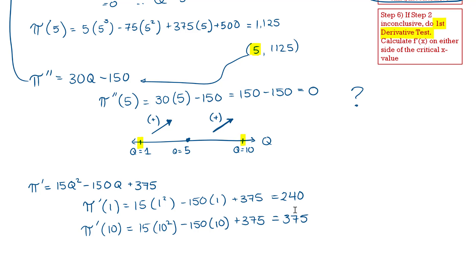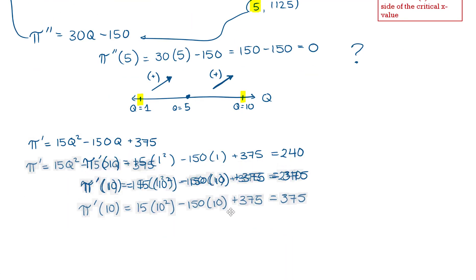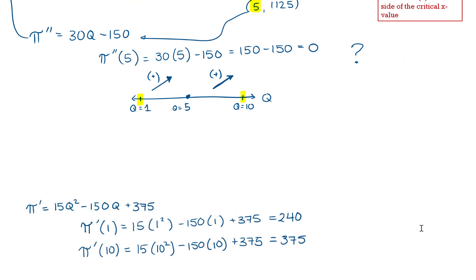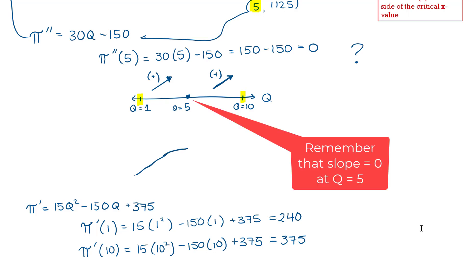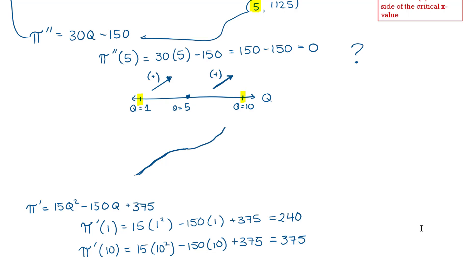What this means is that my function starts off going positive, tapers to a slope of 0, and then goes up again. This is a point of inflection — it is a saddle point because it is both a point of inflection and where the slope equals 0. It is neither a maximum nor a minimum.